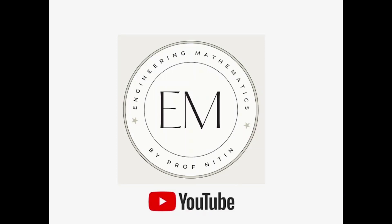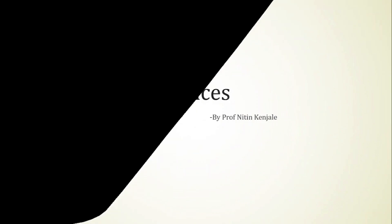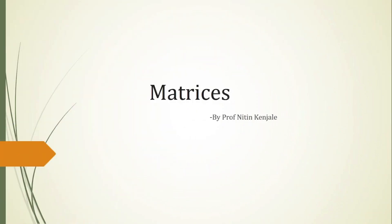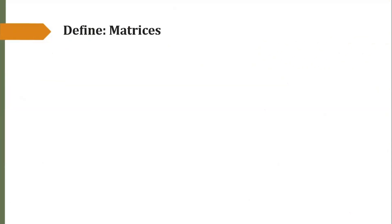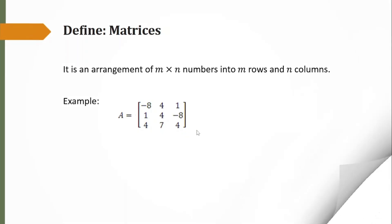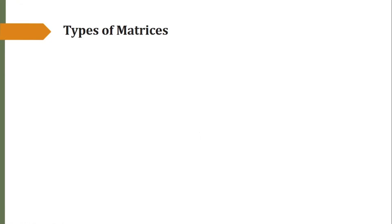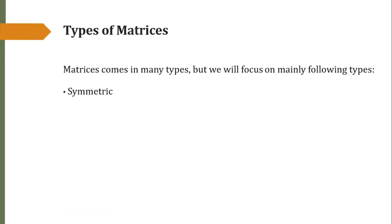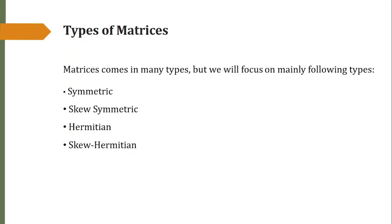Hello everyone, welcome to my YouTube channel on engineering mathematics. In this video we are going to see several special types of matrices and solve examples involving these matrices. Let us first recall the definition of a matrix: it is an arrangement of m×n numbers into m rows and n columns, usually denoted by capital letters. The important types we will cover are symmetric matrices, skew symmetric matrices, Hermitian and skew Hermitian matrices, as well as orthogonal and unitary matrices.